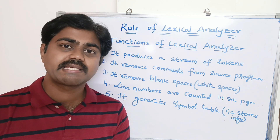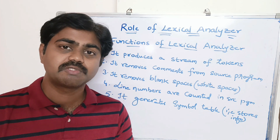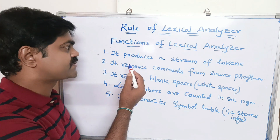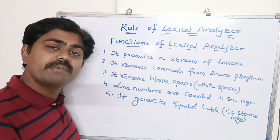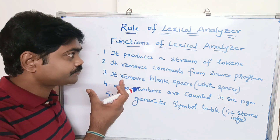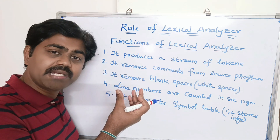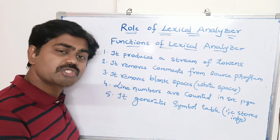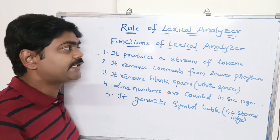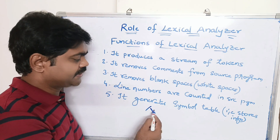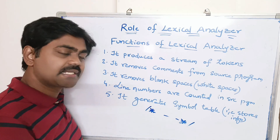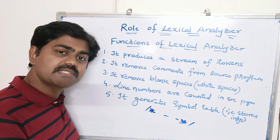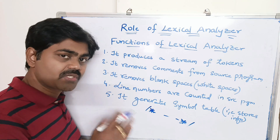Let's start with a basic idea about the lexical analyzer and look at some of its functions. The first function is that it produces a stream of tokens — it takes the source input and divides it into a stream of tokens. Second, it removes comments from the source program. Third, it removes blank spaces, also called white spaces, from the source program.